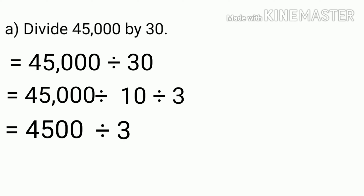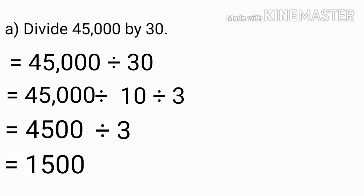Now, we can divide 4,500 by 3. After dividing 4,500 by 3, we get 1,500 as the quotient. So, 45,000 divided by 30 is 1,500.